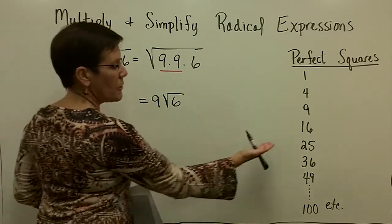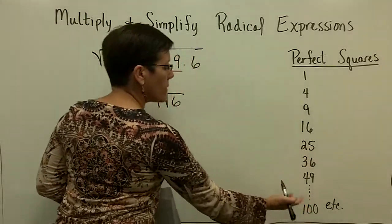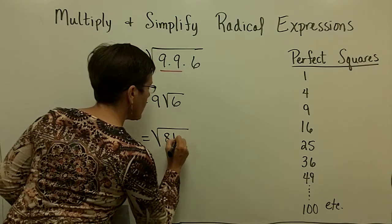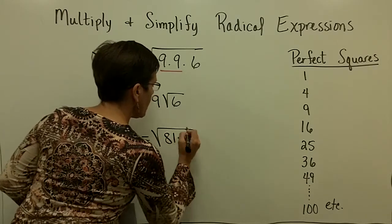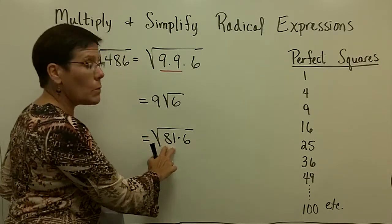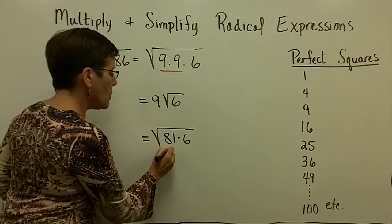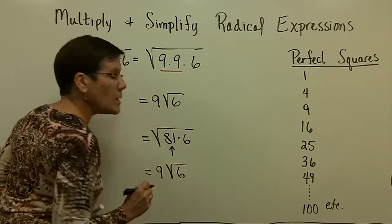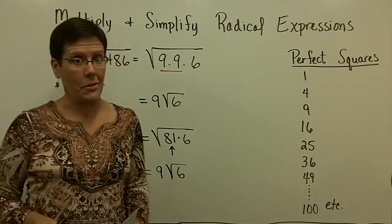Another thing I could have done is, you know, 81 is in this list, and it is very likely that you would find that if you divided 486 with your calculator by 81, you would get 6. And then you would be able to say, well, the square root of 81 is 9, and that comes out from under the radical, and the 6 has to stay underneath.